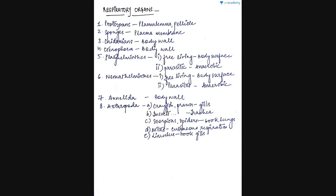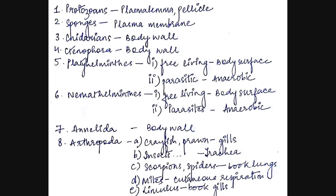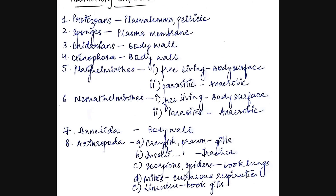Beginning with our discussion of the various respiratory organs in the different phyla of the animal kingdom, let us first begin with the first category, that is the protozoans, which include the amoeba and the paramecium. In them, the respiratory organ is their plasmalemma or the pellicle, because these organisms do not have a cell wall. In all animals they only have a plasma membrane, so in protozoans the plasmalemma is the outermost covering and that is the respiratory organ for this phyla.